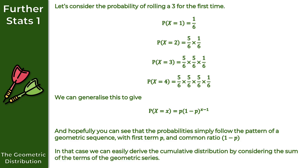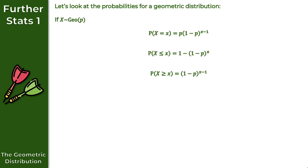From this geometric sequence pattern, we can derive the cumulative distribution by summing the terms of the geometric series — I'll cover that derivation in a separate video. For now, let's state the key probability results. If x follows a geometric distribution with parameter p, we have: P(x = little x) = p(1−p)^(x−1); the cumulative P(x ≤ little x) = 1 − (1−p)^x; and P(x ≥ little x) = (1−p)^(x−1). You can use these without proof.